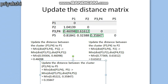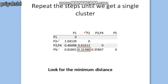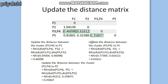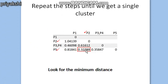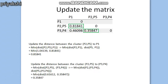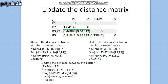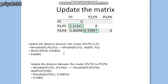We repeat these steps until we get a single cluster. Searching the updated matrix for the minimum value, we find 0.328, which corresponds to p2 and p5. So we merge p2 and p5 into one cluster. Now there are three clusters: p1, {p2,p5}, and {p3,p4}. We update the proximity matrix again using the single-link formula.